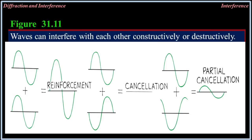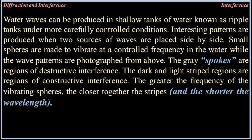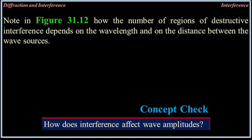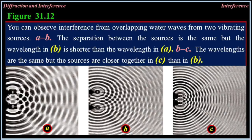Water waves can be produced in shallow tanks known as ripple tanks under carefully controlled conditions. Patterns are produced when two sources of waves are placed side by side. Small spheres vibrate at a controlled frequency while the wave patterns are photographed from above. The gray spokes are regions of destructive interference, and the dark and light striped regions are regions of constructive interference. The greater the frequency of the vibrating spheres, the closer together the stripes and the shorter the wavelength. Figure 31.12 shows how the number of regions of destructive interference depends on the wavelength and the distance between the wave sources.